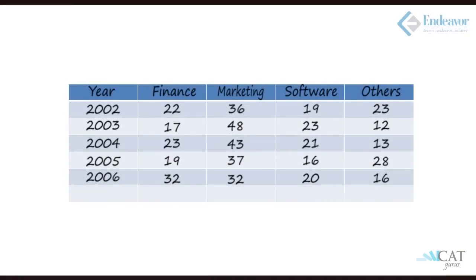Now let's find the difference. There are two ways — either find individual percentages for both specializations, or find the percentage difference and multiply by the total. For each year, marketing and finance percentages are: 36 and 22 (difference 14), 48 and 17 (difference 31), 43 and 23 (difference 20), 37 and 19 (difference 18), and 32 and 32 (difference 0). So the last year contributes zero.